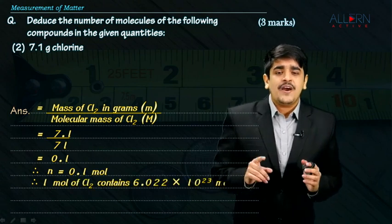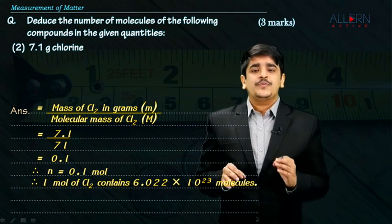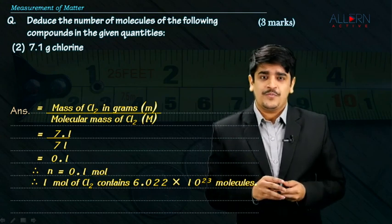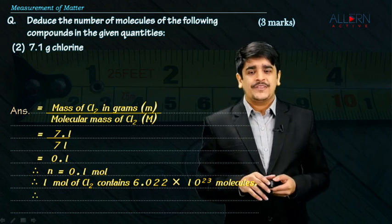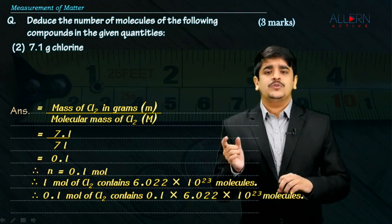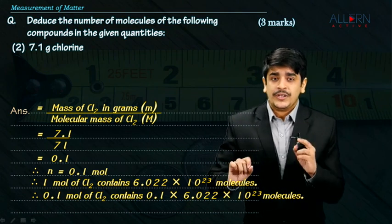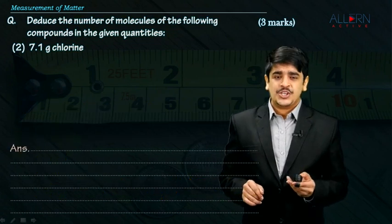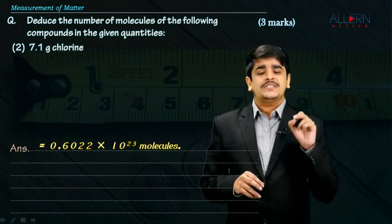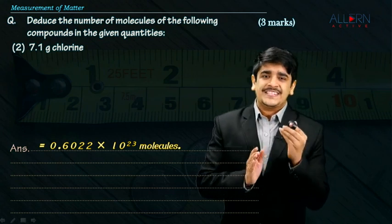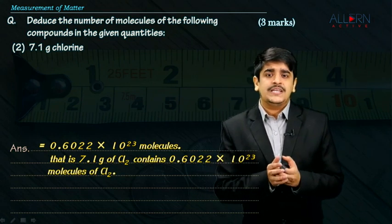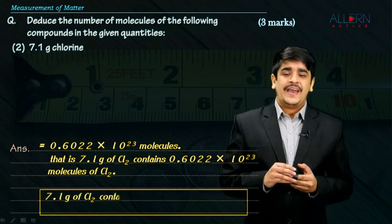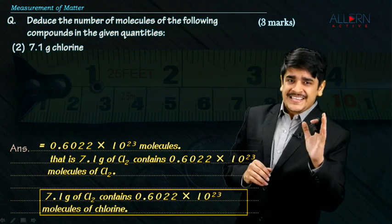I know that 1 mole of any substance contains 6.022 × 10²³ molecules. I don't have 1 mole of chlorine — I have 0.1 moles. So 0.1 moles of chlorine contains 0.1 × 6.022 × 10²³ molecules. Multiplying 0.1 × 6.022 shifts the decimal place, giving 0.6022 × 10²³ molecules. Therefore, 7.1 grams of chlorine contains 0.6022 × 10²³ molecules of chlorine, and that is the correct final answer.